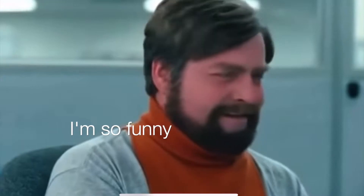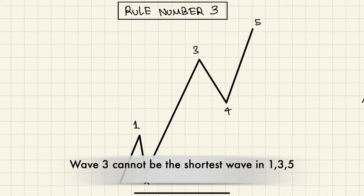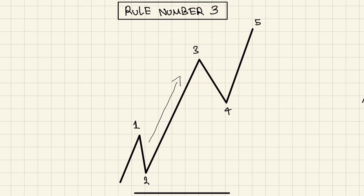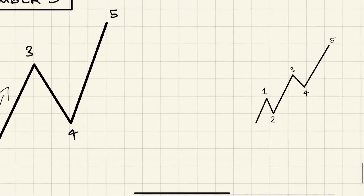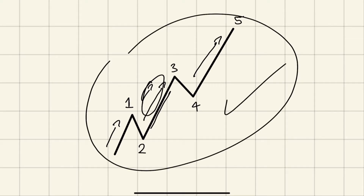Rule number three involves wave three. Wave three is usually the longest, as you've seen from my previous video, but the rule is wave three can never be the shortest. Wave five could be the longest, but wave three can't be the shortest. Drawing it on an iPad is idealized, so now let's put it to real-world use and look at some real graphs.